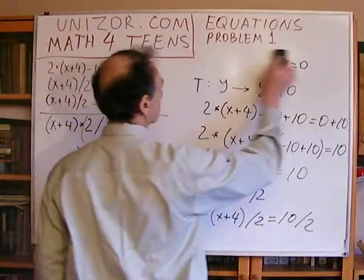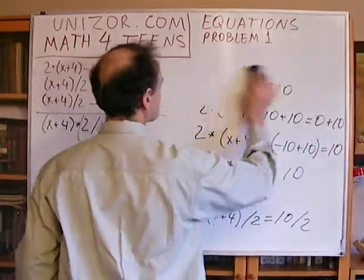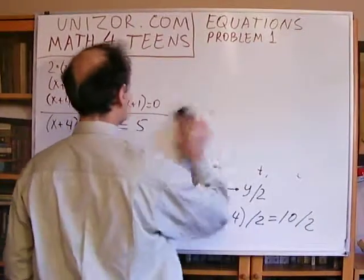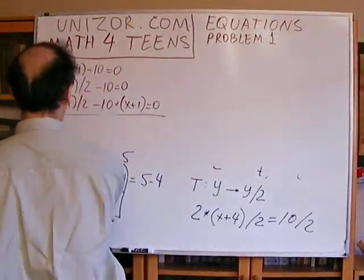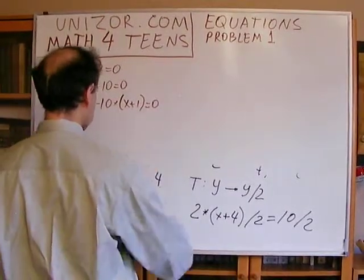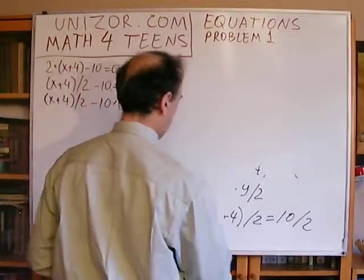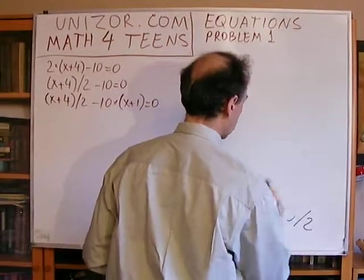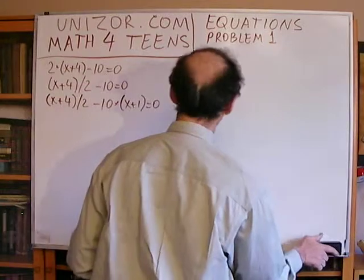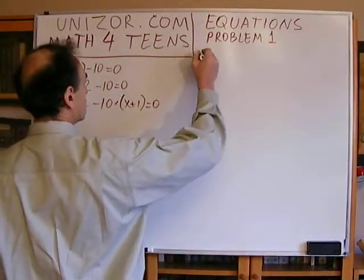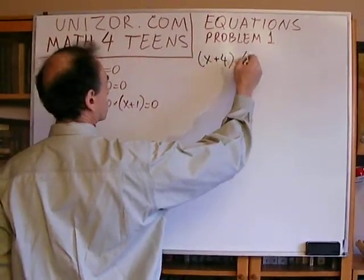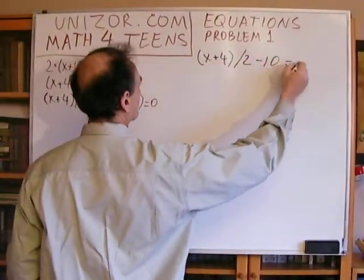Let's do the next one, hopefully much faster. All of these are no more than illustrative examples of how to use invariant transformations — not difficult equations I'm trying to solve. The next equation will be x plus 4 divided by 2 minus 10 equals 0.